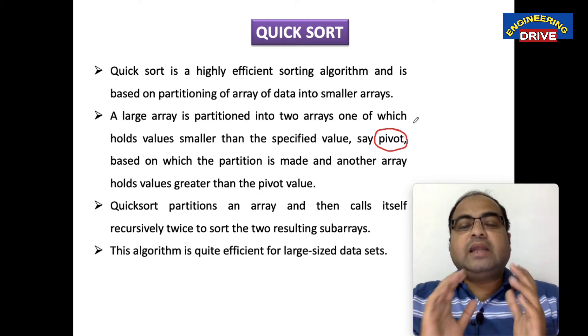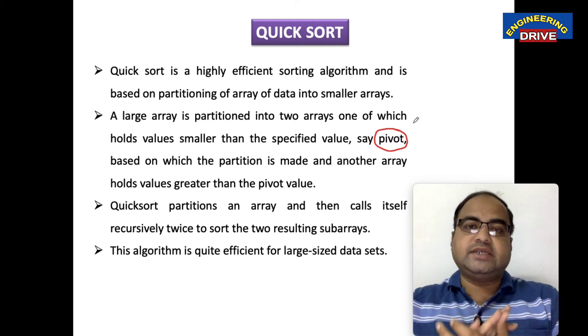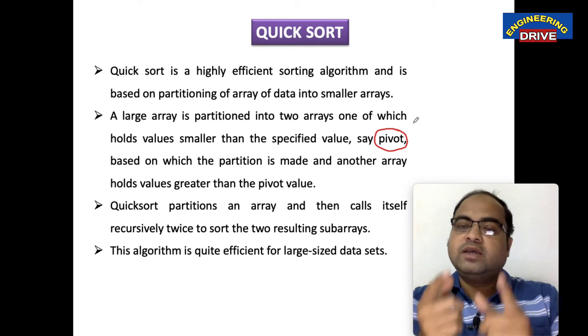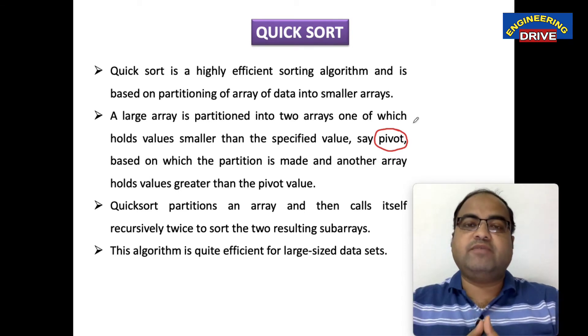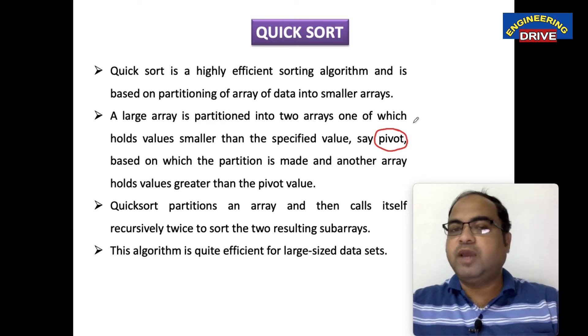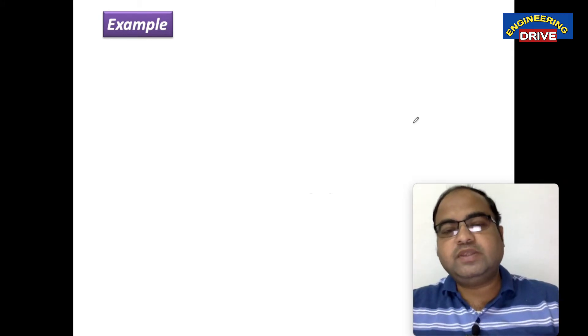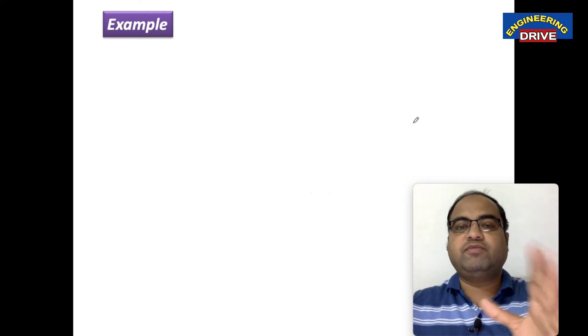This algorithm is quite efficient for large-sized data sets. Like merge sort which can be used for large sets of data, quicksort also can be used when the numbers are in huge quantity — when we want to sort a huge list of numbers, quicksort is applicable there also. Now I will show you one example. With this example it will be clear to you the working of quicksort, what a pivot element is, and how to select the pivot element.